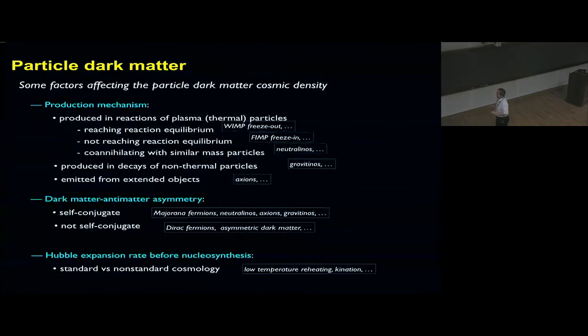We could have non-standard cosmology before nucleosynthesis, like low-temperature reheating or a kinetic phase dominated by the kinetic energy of a scalar field. There are simple models of the reheating of the universe. After the end of inflation, the entropy is basically zero, and we need to increase the entropy to reach the Big Bang. That's the reheating phase. There are many models, many possibilities, and that is why there are so many studies of dark matter.